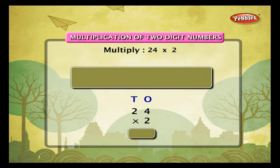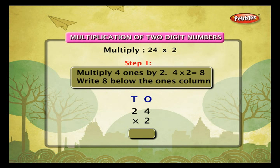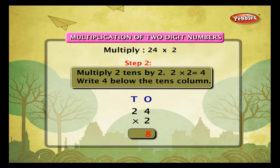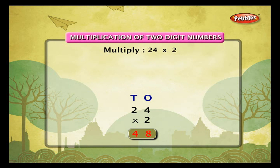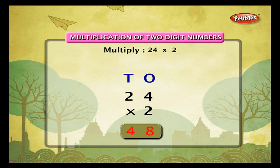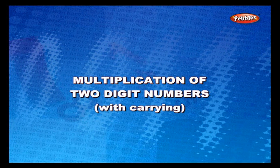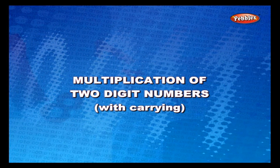Multiplication of two-digit numbers without carrying. Example: multiply 24 by 2. Arrange them in columns. Multiply 4 ones by 2 — 4 into 2 is equal to 8. Write 8 below the ones column. Multiply 2 tens by 2 — 2 into 2 is equal to 4. Write 4 below the tens column. Thus, 24 into 2 is equal to 48.